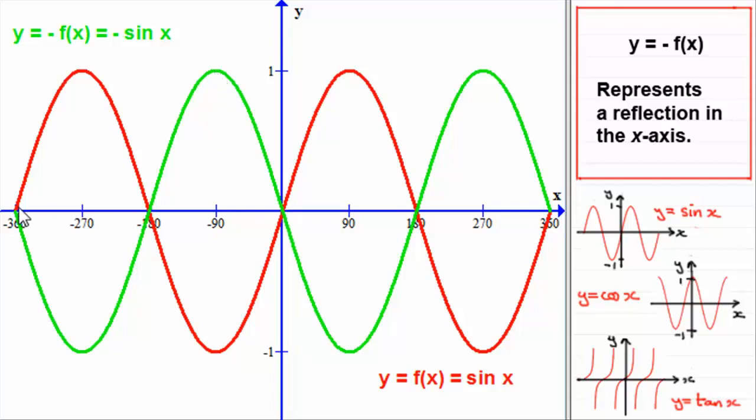Points on the x-axis, these points, remain invariant—that is, they stay exactly the same. A point like this one just gets mirrored up here, and so on.